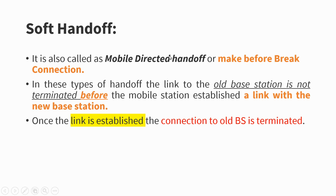There are two types of handoff. Soft handoff is very important as per your syllabus — it is also called mobile-directed handoff. It uses a make-before-break connection, meaning we get a new channel from the new base station, that is the Angamali base station, before the old connection is terminated. In this type, the link to the old base station is not terminated before the mobile station establishes a link with the new base station. For example, I am getting 802.2 as a carrier from the Matur base station, and that link is maintained until a new channel, say 900.8, is allocated by the MSC from the Angamali base station.